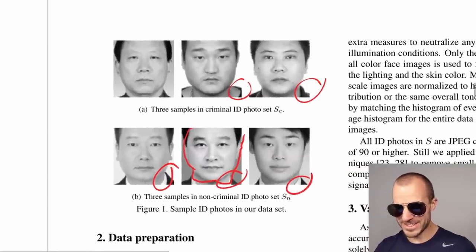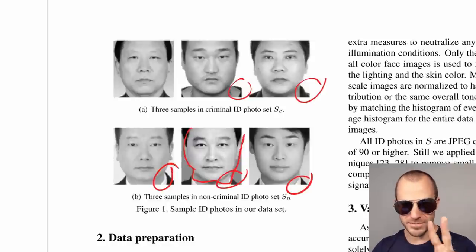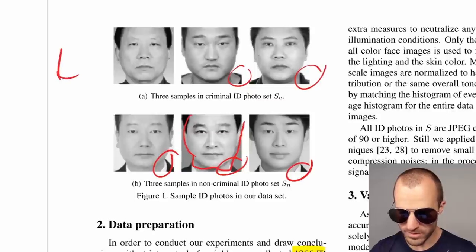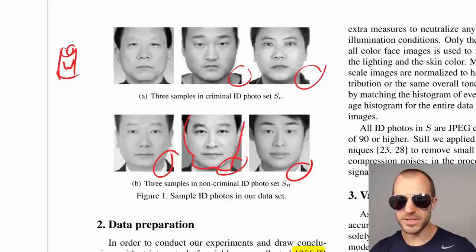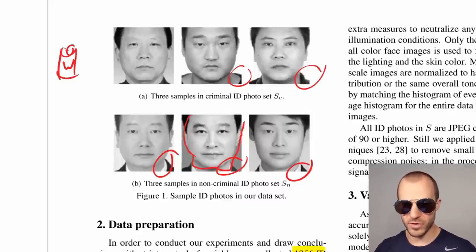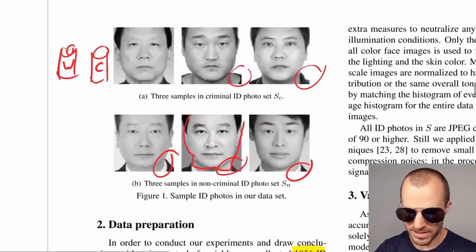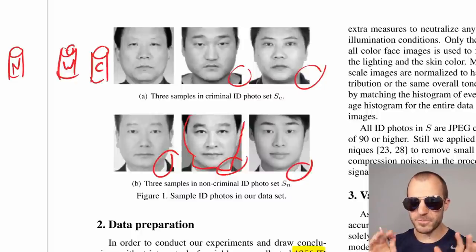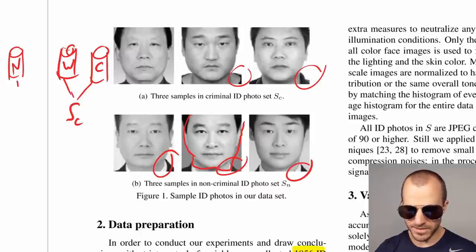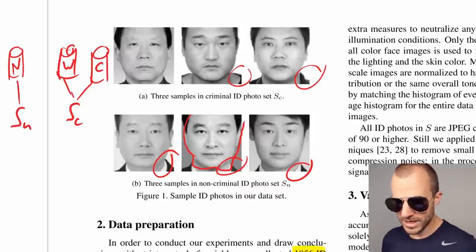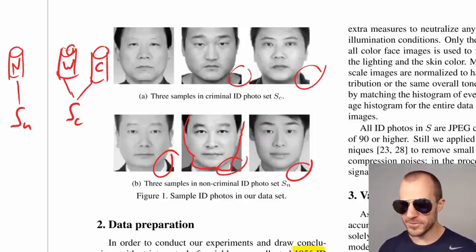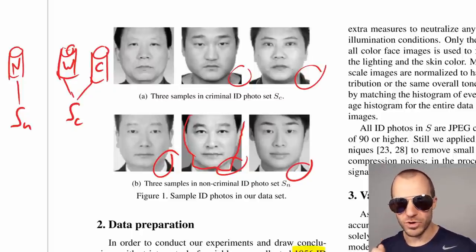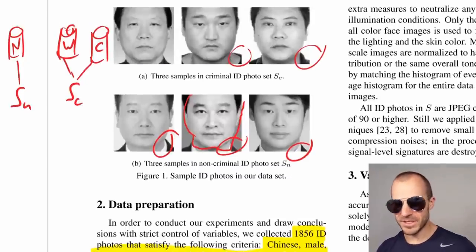But it gives you an indication that the origins of the two image groups might not actually be the same. You basically have two databases of criminals: one is the wanted criminals (W), released by the police, and the other is the convicted criminals (C). On the other side, you have non-criminals collected from the internet. You have three different databases, and these two make up the criminals while this one makes up the non-criminals. Herein lies the problem: even though the white collars are masked out, you have to make sure that whatever you find isn't just a property of how you collected the data. This doesn't really come through in this paper.